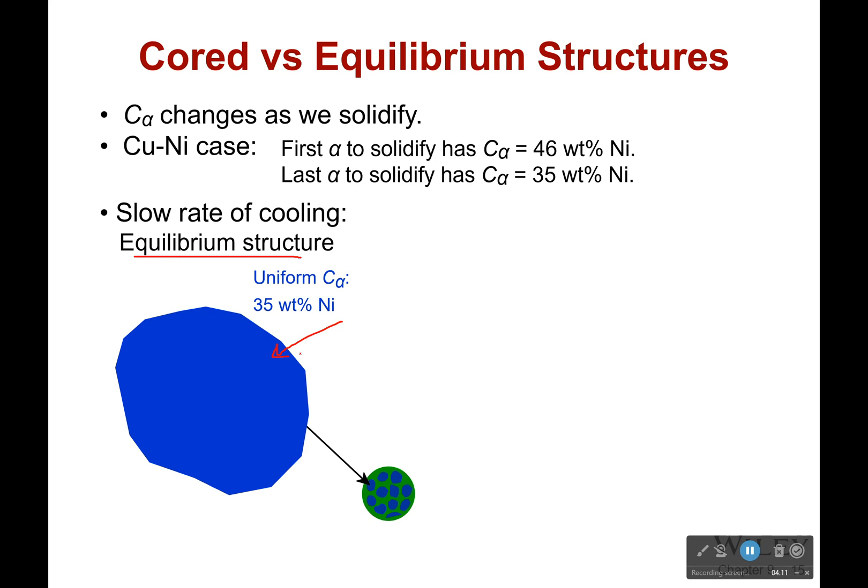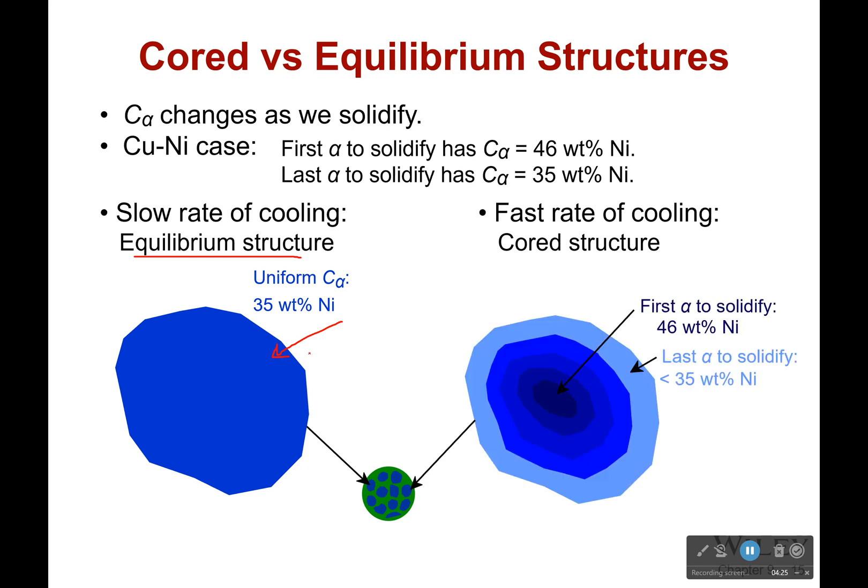Because remember, to begin with, the solid structures had a much higher composition of nickel. However, if we cooled it quickly, those would not be able to change quick enough. And so we get this cored structure where at the very center we have very nickel heavy structures. As we go farther away from that, we have more and more copper in this composition.